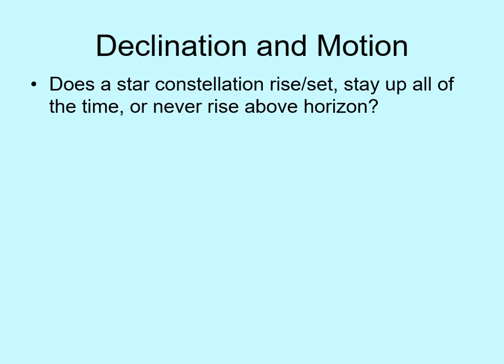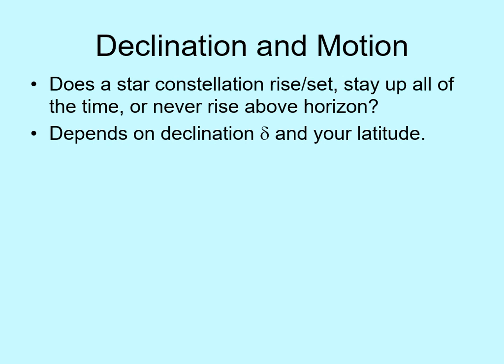We saw earlier that from most places on the Earth's surface, some stars rise and set, others stay up all the time, circling around the celestial pole — we call these stars circumpolar — and still others never rise above the horizon. If you know your latitude and the declination of a given object in the sky, you can tell which of these categories that object will be in.